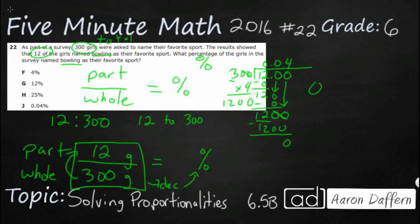Now 0.04, four hundredths, move it over twice, and that's how you get your percent. We can drop that off. So it is going to equal 4%. So our answer here is going to be F.